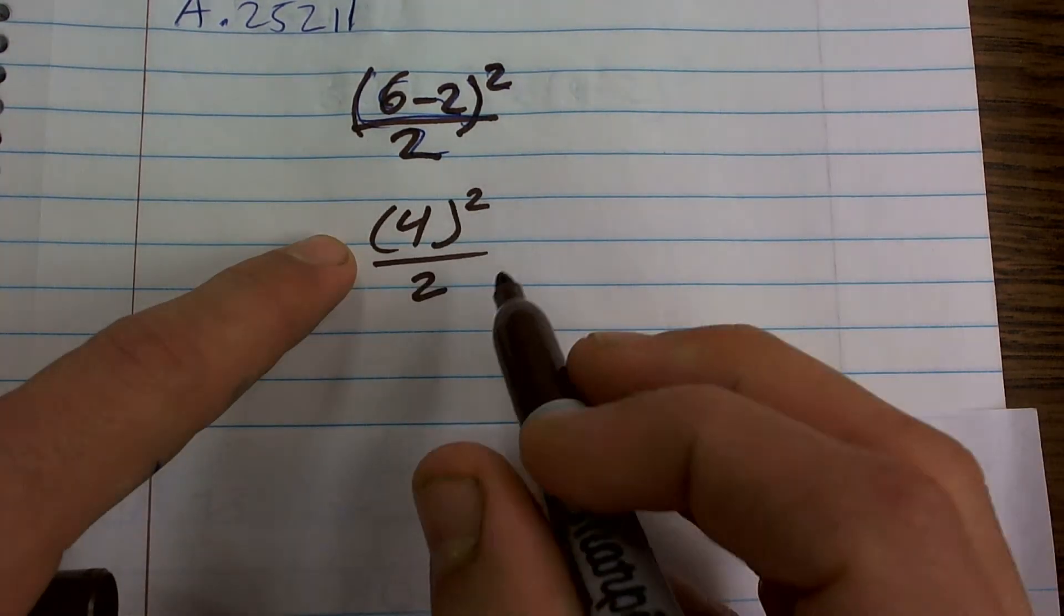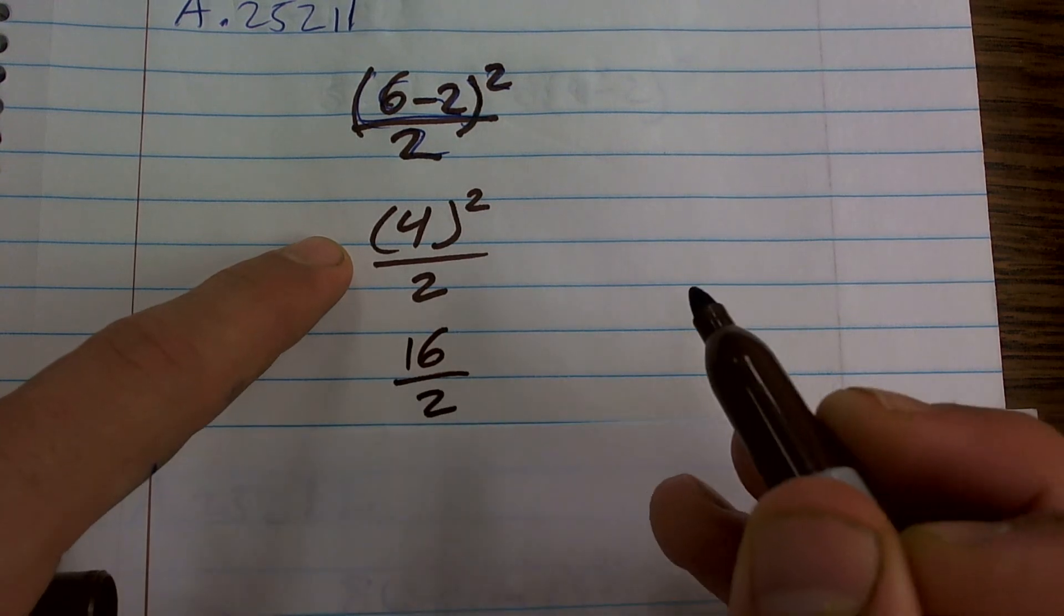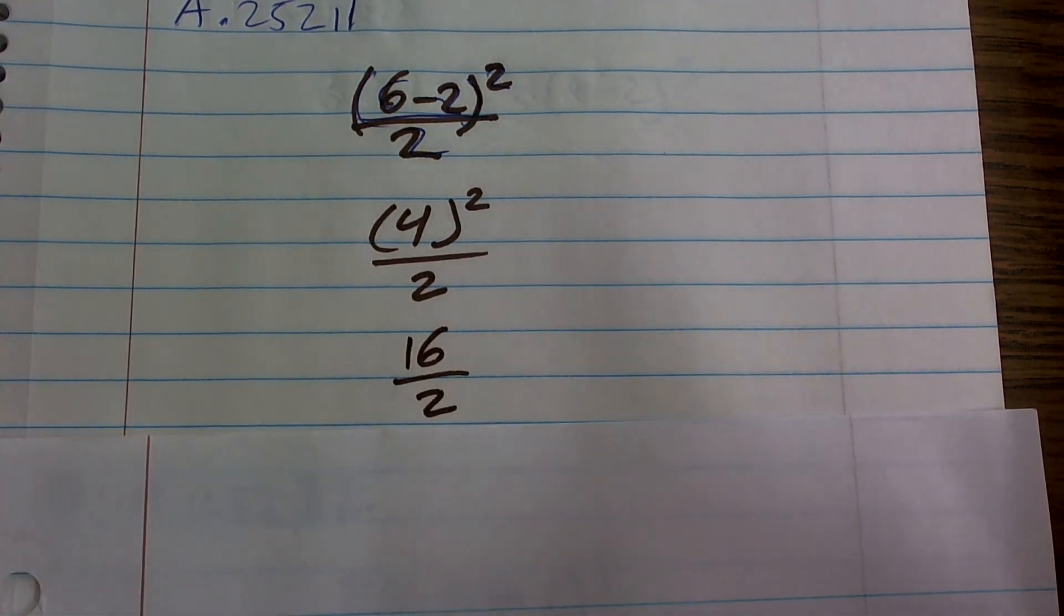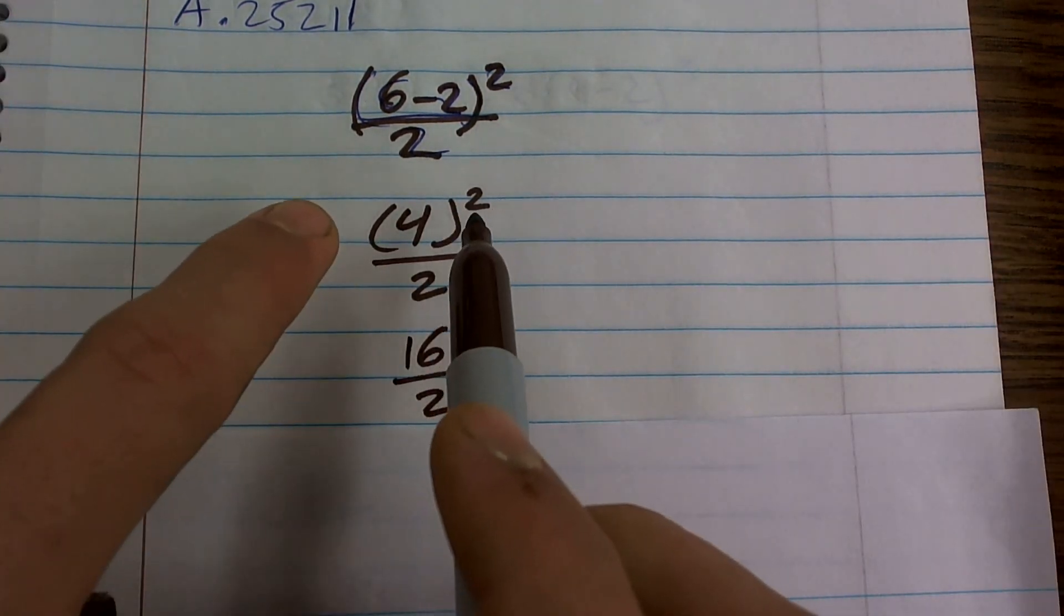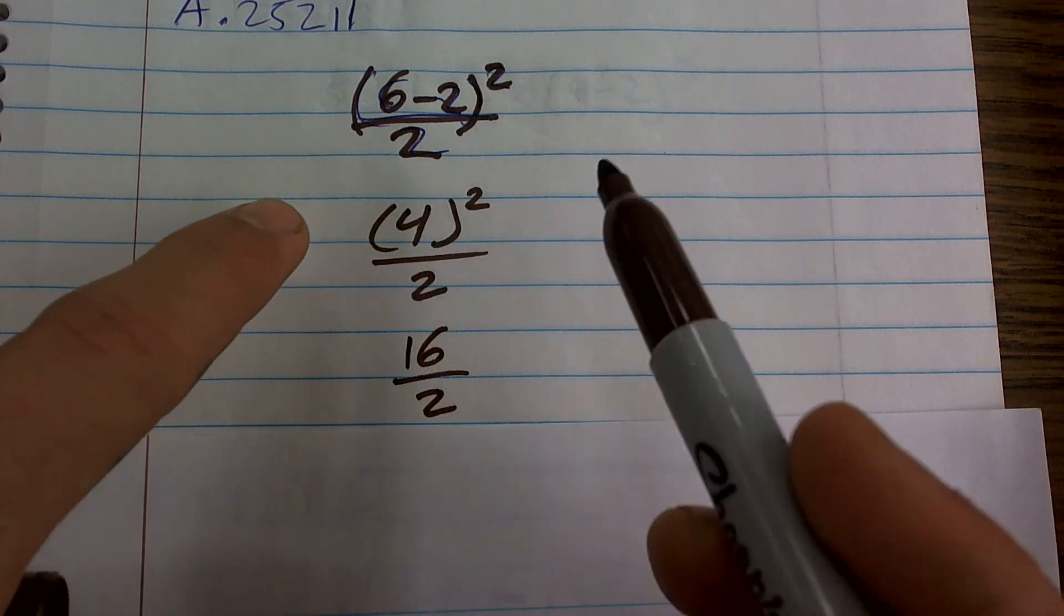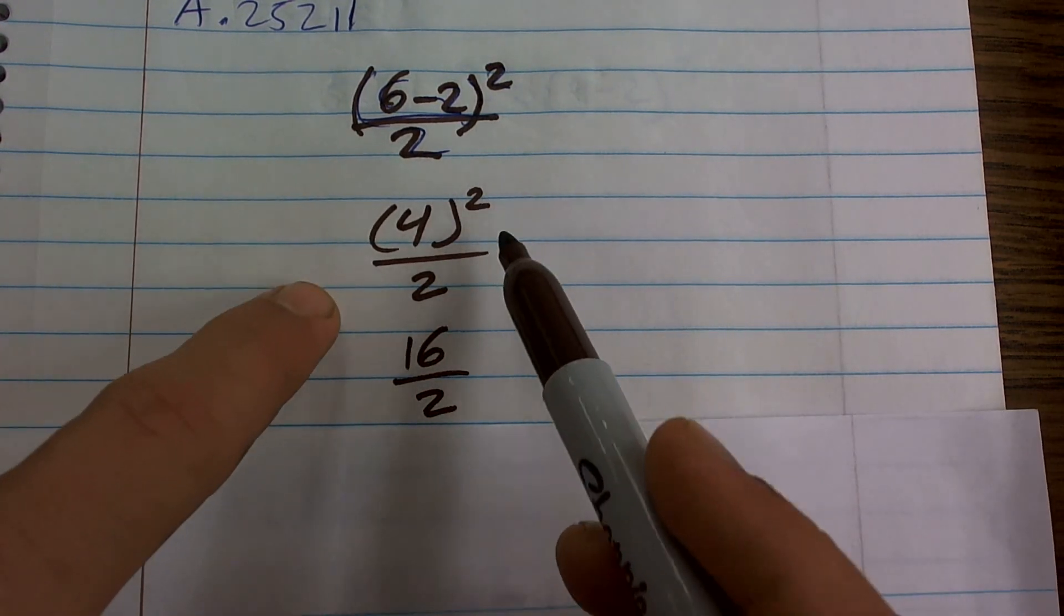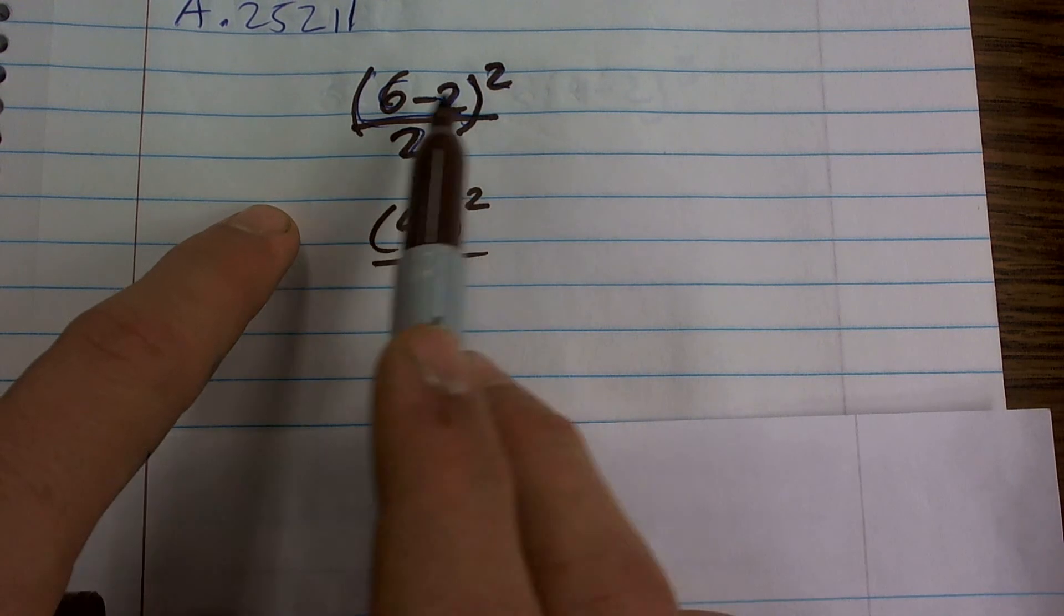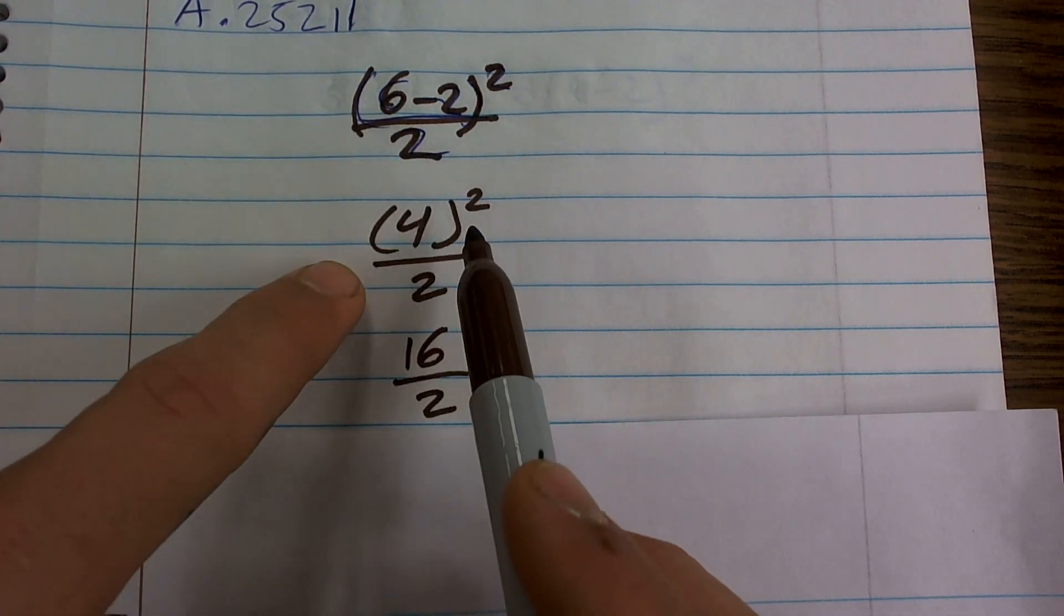Well, 4 squared is 4 times 4, which is 16 divided by 2. Now let me make sure I explain this. Remember, we got to do our next operation, which is powers or exponents. If we have any exponents, after we've completed what's inside the parentheses, we do our exponent next.